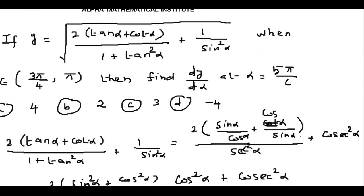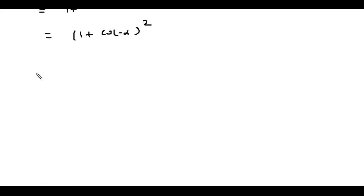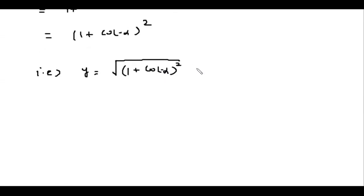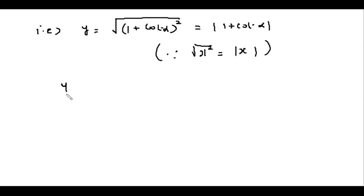So y equals the square root of (1 + cot α)². Taking the square root gives the modulus of (1 + cot α), because the square root of x² is the modulus of x. Therefore y(α) = |1 + cot α|.